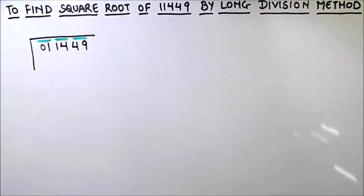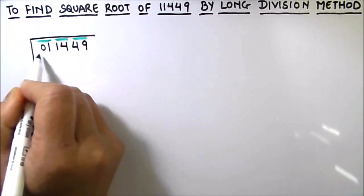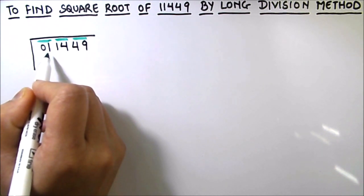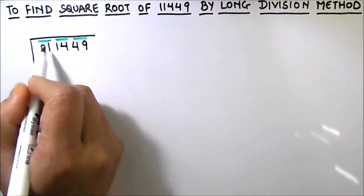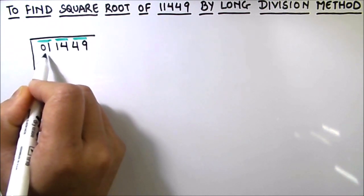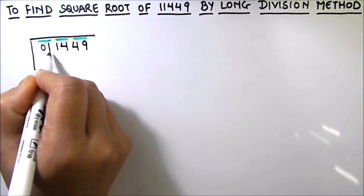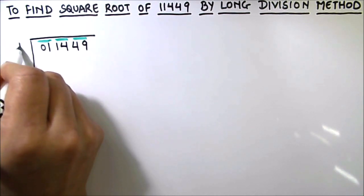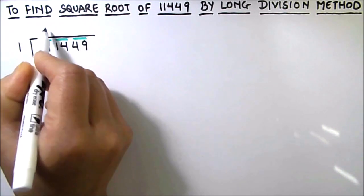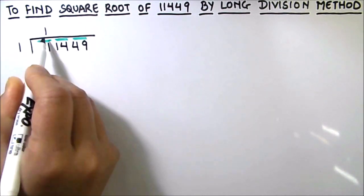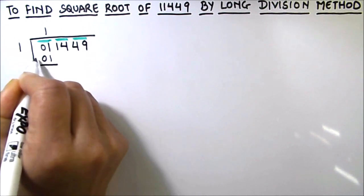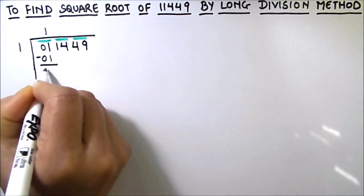The next step is to divide this leftmost group number, which is one, with such a square number whose product with the same number gives the result as one or less than one. As we see here, we have only number one and square of one is one, so we are going to use one as our divisor and one as our quotient. So one times one is one. Now we'll subtract the two numbers, our remainder is zero.